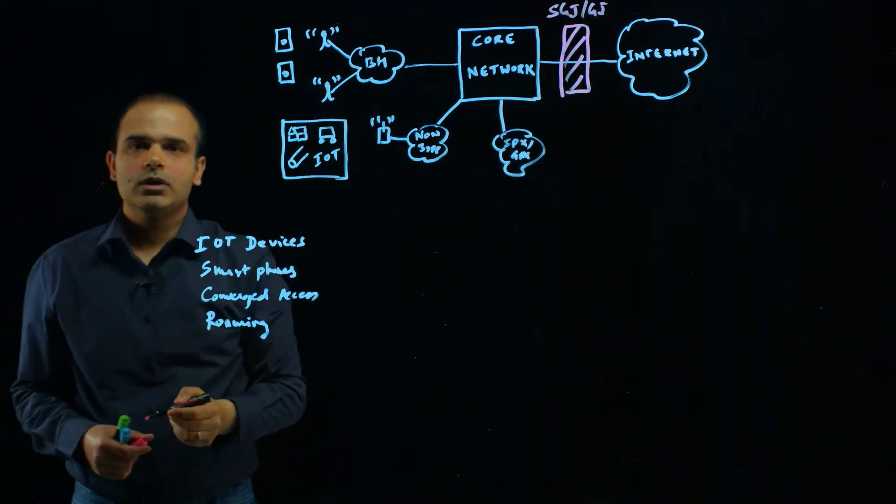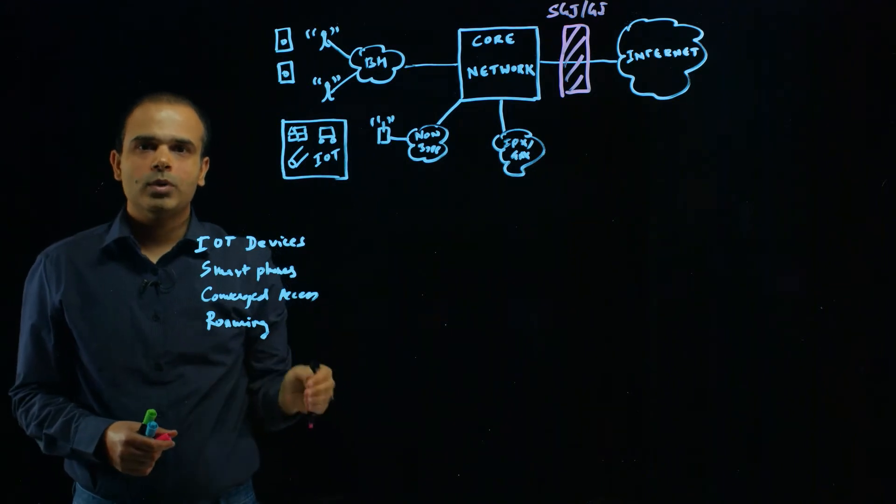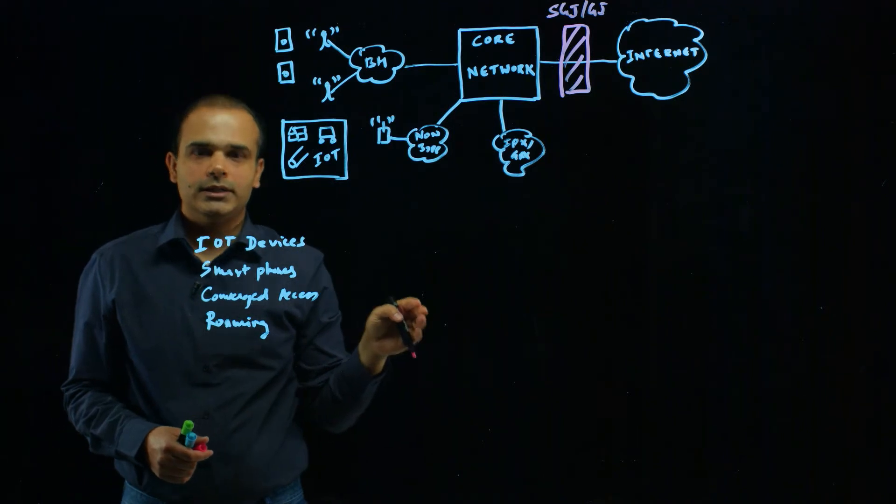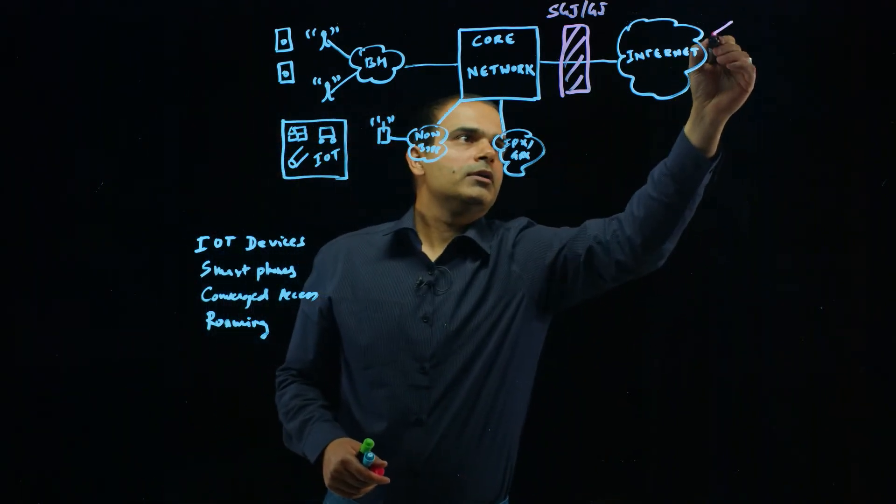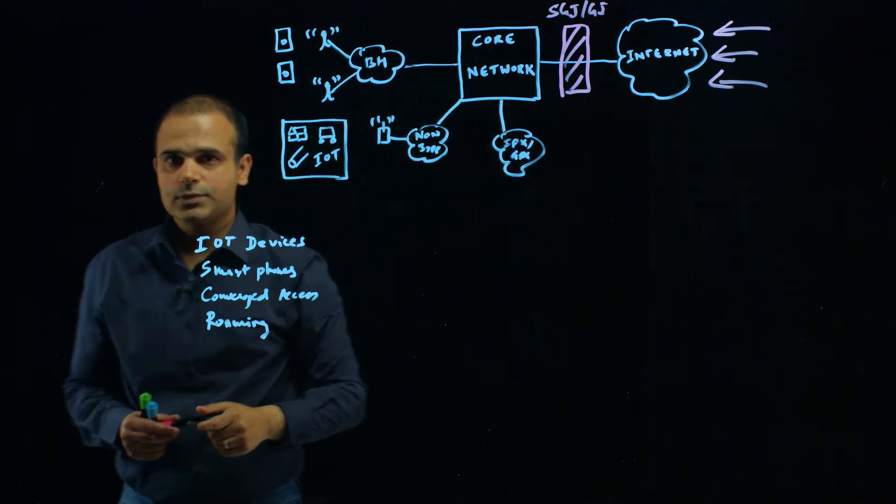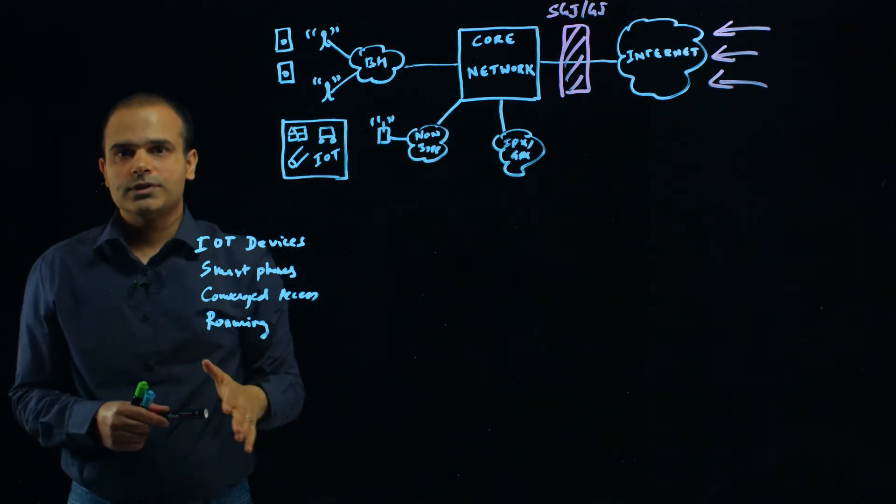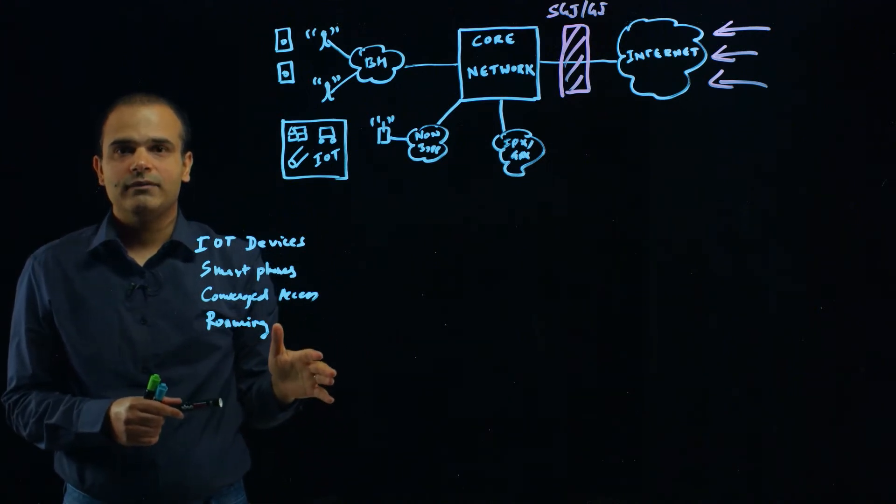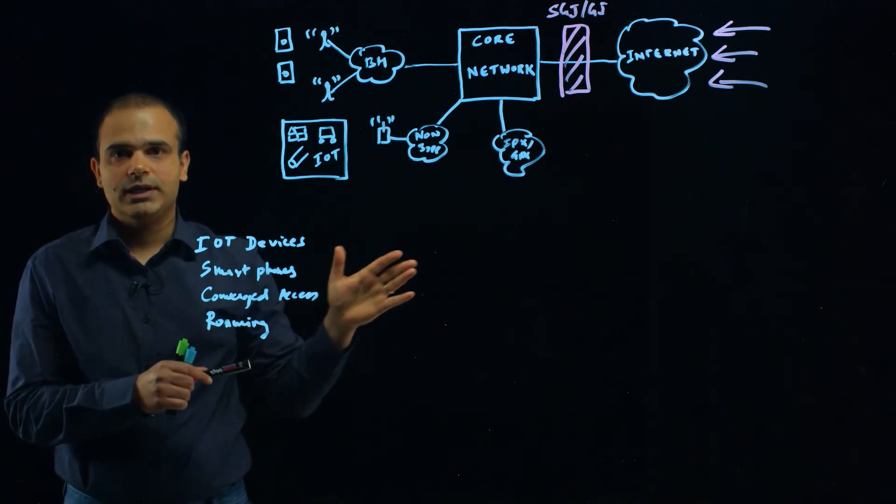The SGI-GI firewall has primarily been port IP-based firewall, and it was only protecting the network from threats coming over the internet. That's where all the focus of mobile network operators' security strategies has always been - on the SGI-GI interface.